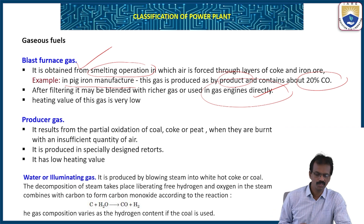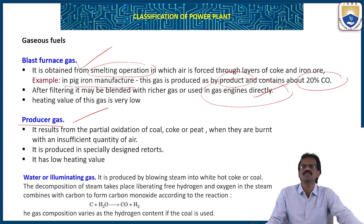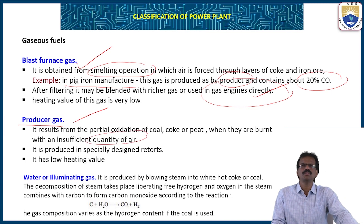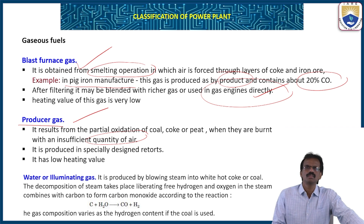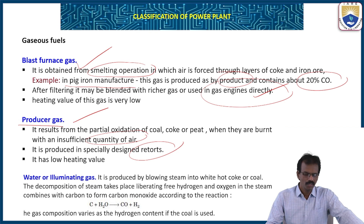Next is producer gas. It results from the partial oxidation of coal, coke, and peat when they are burned with an insufficient quantity of air. It is produced in specifically designed retorts. It has a lower heating value compared to other gaseous fuels.